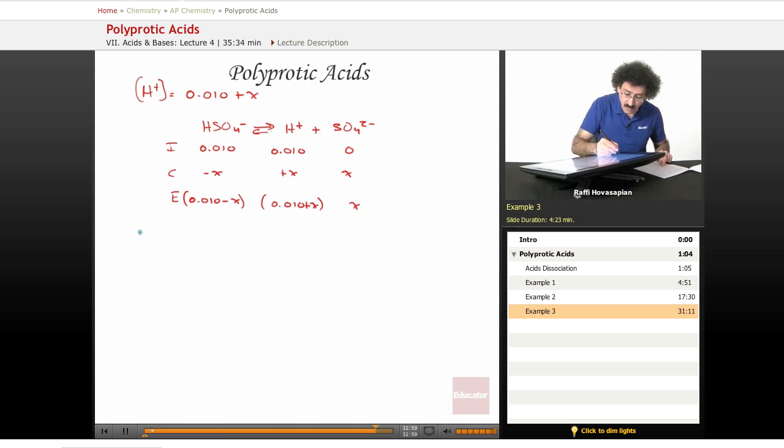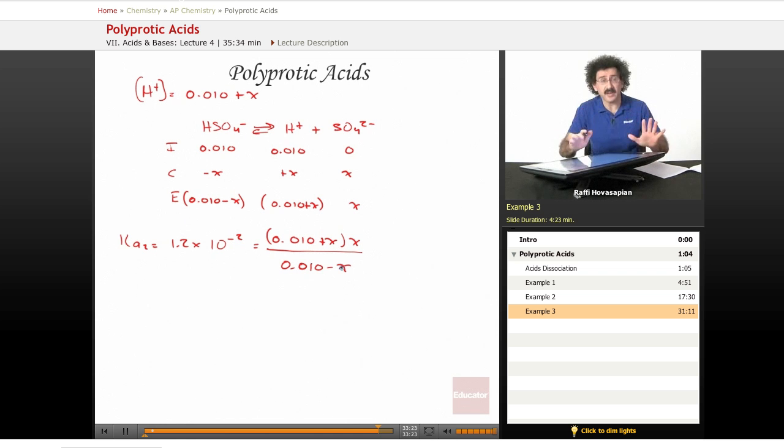We write Ka2, which is 1.2 times 10⁻² equals (0.010 plus X) times X over (0.010 minus X). We have to solve this equation.